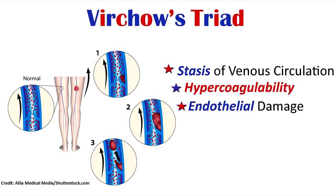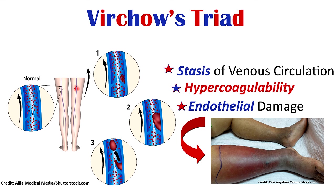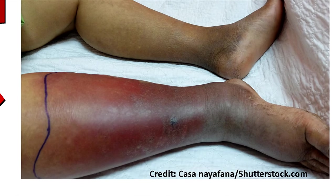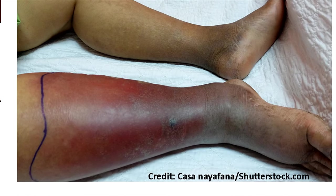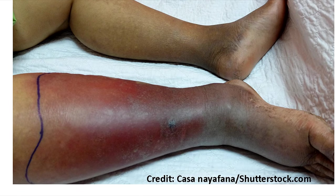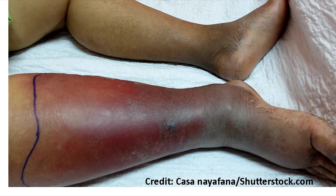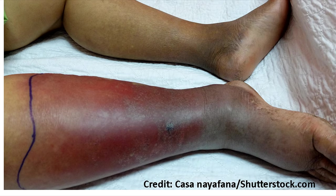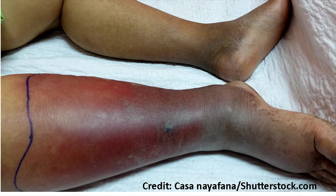Now, Virchow's Triad — just as the name says, triad means a group of three. To help you remember those three main factors, remember the word SHE. S stands for stasis of venous circulation, H is hypercoagulability, and E is endothelial damage. Whenever you have those type of factors presenting, you can get a blood clot. This picture shows a patient who has a blood clot. Notice the leg on the bottom — it's very swollen and red, and if we touched it, it would likely be very warm compared to the leg beside it, which is not red and not swollen.